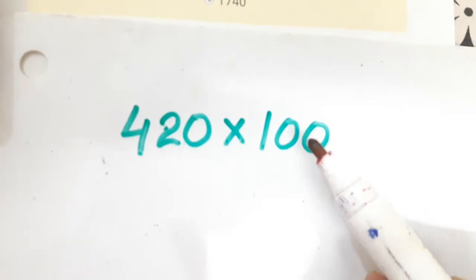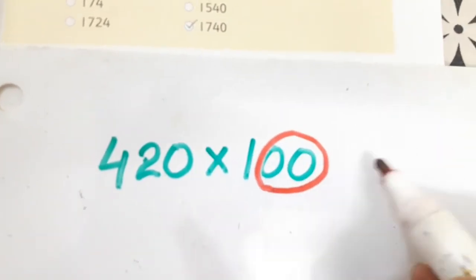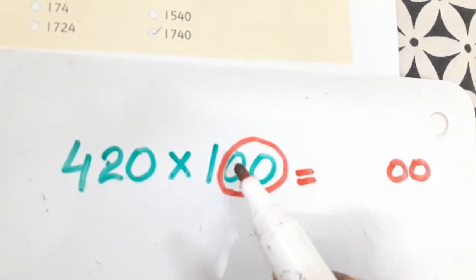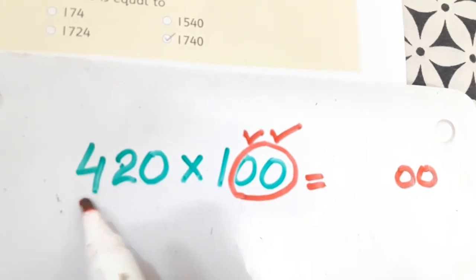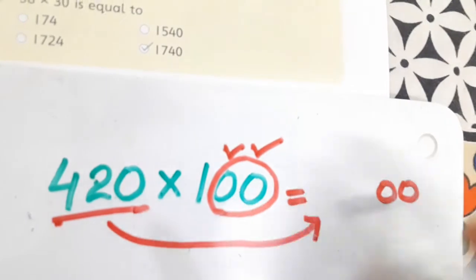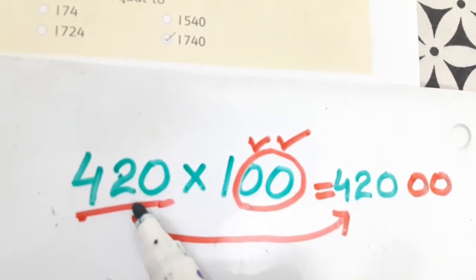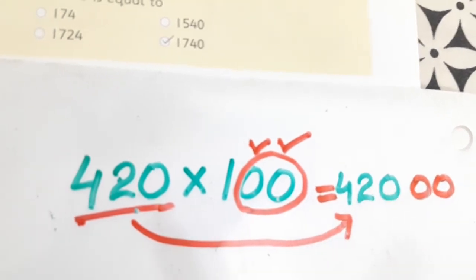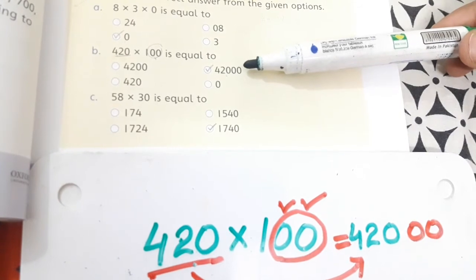If we multiply any digit with 100, 10, 200, 300, 400, or up to 1000, 2000, 3000 — this type of number — what we will do is just place these zeros as they are on the right side of the answer. Because we are multiplying 420 by 100, there are two zeros in 100, so we move two zeros to the answer. The original number 420 stays as it is, and we add two zeros — so our answer is 42000. You can see this is our answer.